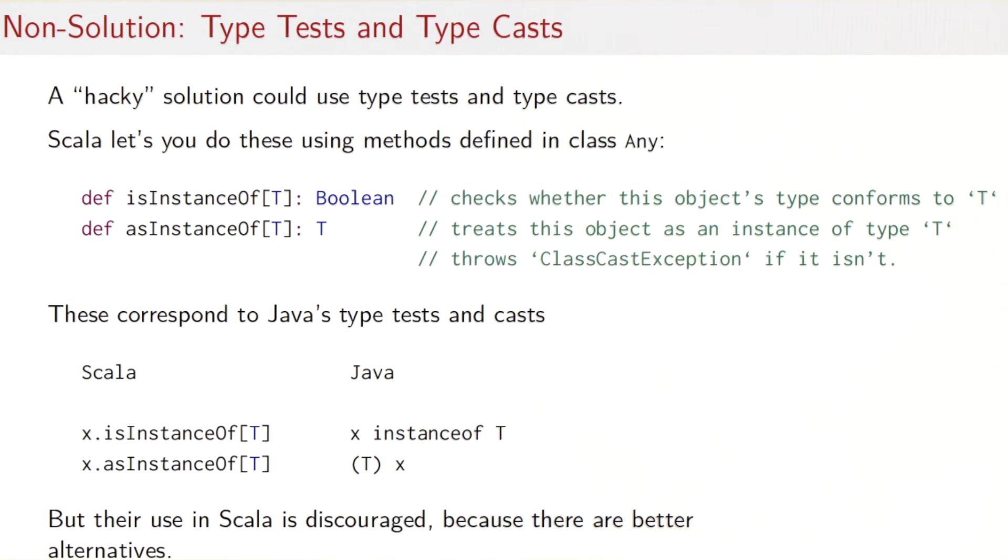Well, here's one which I would actually call a non-solution. Most languages have some form of type testing and type casting, and Scala lets you do that as well. So it has a method isInstanceOf that can check whether an object's type conforms to T, and it has a method called asInstanceOf that treats an object as an instance of a type T. So that would be a type cast. If the cast fails at runtime because the object is not a T at runtime, then it will throw a class cast exception. So x isInstanceOf is really the same thing as x instanceof T in Java, and x asInstanceOf T in Scala is the same thing as a type cast, which is written like this in Java.